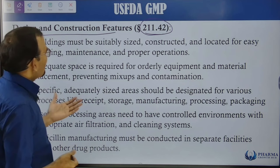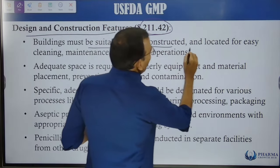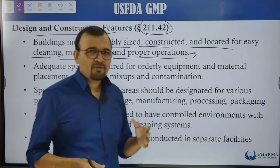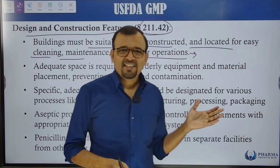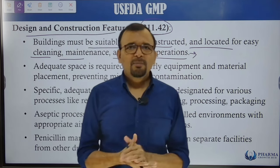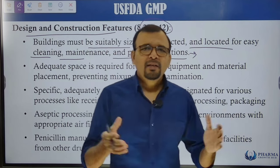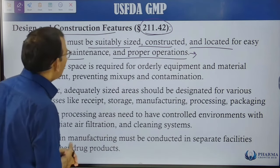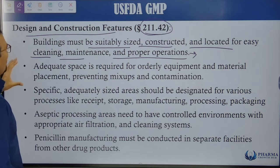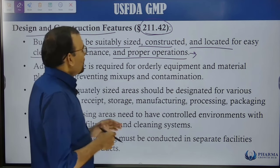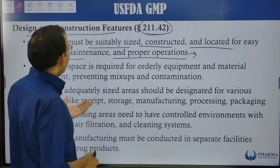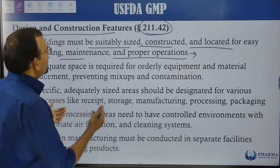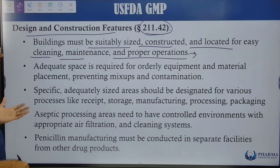Buildings must be suitably sized, constructed, and located for easy cleaning, maintenance, and proper operations. There are many commonalities between Schedule M and Part 211. Adequate space is required for orderly equipment and material placement, preventing mix-ups and contamination. There must be segregation between different areas.